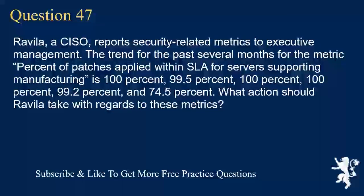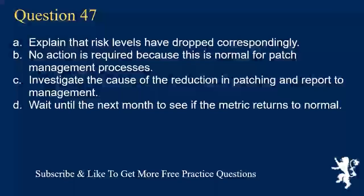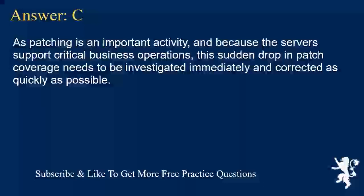Question 47. Reveela, a CISO, reports security-related metrics to executive management. The trend for the past several months for the metric 'percent of patches applied within SLA for servers supporting manufacturing' is: 100%, 99.5%, 100%, 100%, 99.2%, and 74.5%. What action should Reveela take with regards to these metrics? A. Explain that risk levels have dropped correspondingly. B. No action is required because this is normal for patch management processes. C. Investigate the cause of the reduction in patching and report to management. D. Wait until the next month to see if the metric returns to normal. Answer C. As patching is an important activity, and because the servers support critical business operations, this sudden drop in patch coverage needs to be investigated immediately and corrected as quickly as possible.